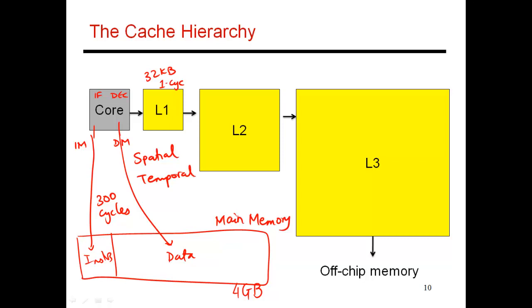Temporal locality refers to the fact that if I just fetched block x at time t, then at time t plus i, I'll call it, after a few more cycles, I'm, again, likely to access the same block x. So temporal locality refers to the fact that over time, the same block gets repeatedly accessed.